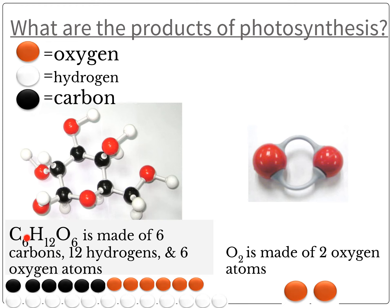When we have C6, we can go in and actually count the carbons in the molecular model: 1, 2, 3, 4, 5, 6. And if we were going to count the hydrogens, we could count 12 of these white atoms, which represent the hydrogen, and 6 oxygen atoms — these red ones. And O2 over here: 2 oxygens. So the shorthand is valuable in that you can tell how many atoms there are, and you can also count them because they correspond to the molecular model.